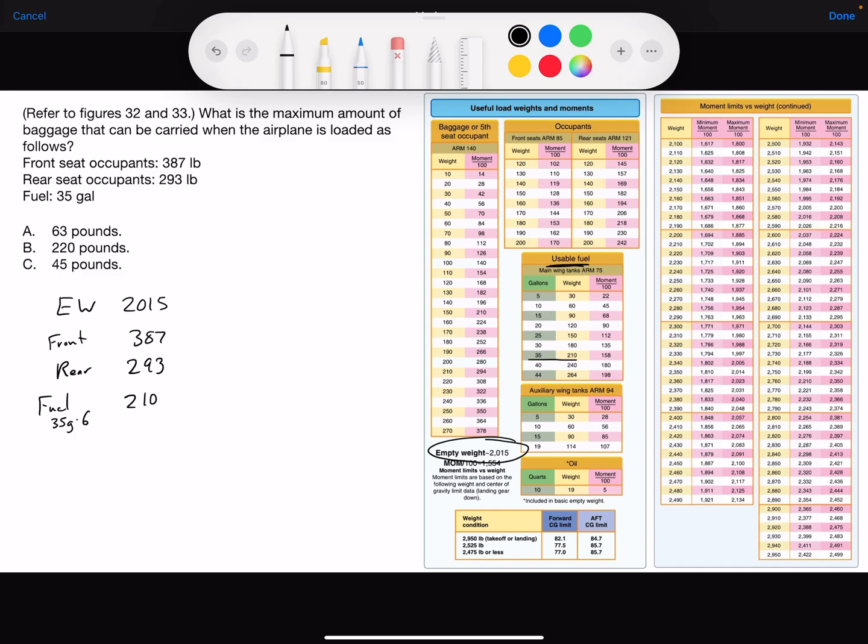We'll total up the weight of everything and that gives us 2905.